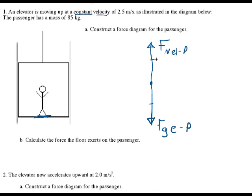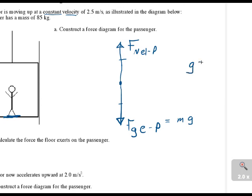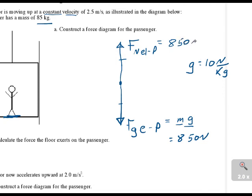We have a normal force from the elevator on the passenger. We know those two are equal. We want to calculate the force the floor exerts on the rider. We know that the force of gravity equals mass times gravitational field strength, and our gravitational field strength equals 10 newtons per kilogram. His mass is 85 kilograms, so 85 times 10 is 850 newtons. Since we're moving at constant velocity, the forces are balanced, meaning the normal force from the elevator is also 850 newtons.